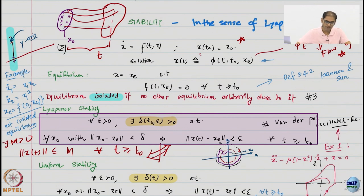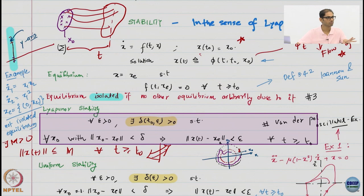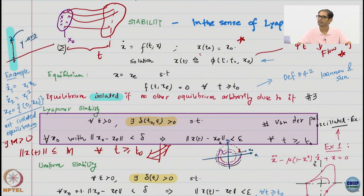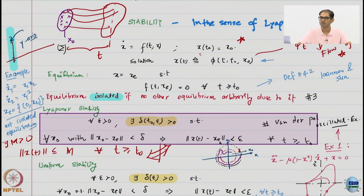Once we have the notion of equilibrium, all notions of Lyapunov stability are defined with respect to an equilibrium. No equilibrium means no notions of stability — this is how Lyapunov stability works. There is of course Lagrange's notion, which we do not really talk about, where you do not particularly need equilibrium; there you are talking about boundedness, ultimate boundedness, and uniform boundedness — slightly different notions.